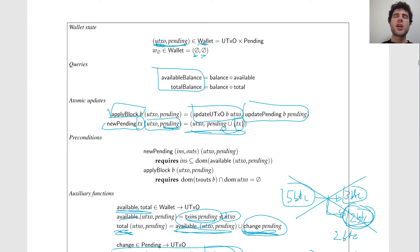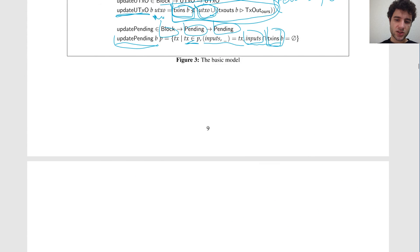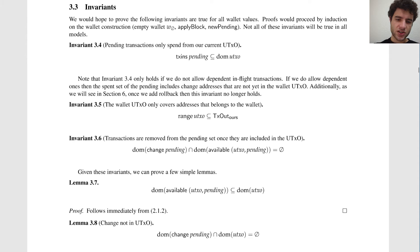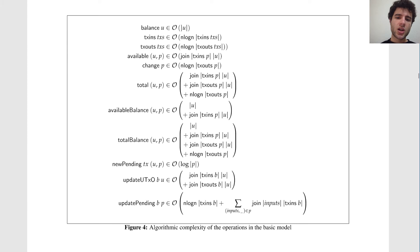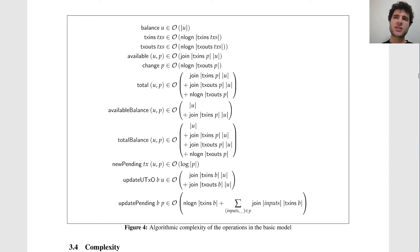Now that we have our basic wallet, we want to add some extra features to make it faster. These are some invariants — they're all fairly simple. Here we show the running time of various operations — how long in the worst case it takes to do something. If you're not familiar with Big-O notation, this is a programming notation that says: what is the worst-case running time of an algorithm.